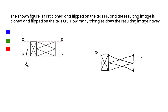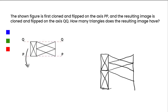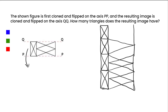Here Q, here Q, here P, here P. Once this is cloned and flipped, it looks the same at this point. Then the entire resulting image will be cloned and flipped again — you'll get the same thing on top, just like this. Now this is our final image.